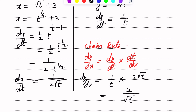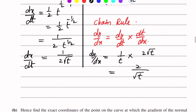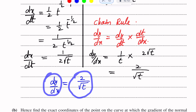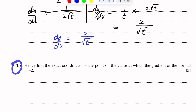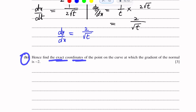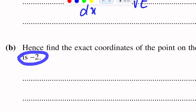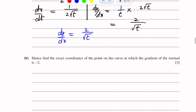So dy over dx, which we need to find in terms of t, equals dy over dt which is 1 over t, multiplied by dt over dx. dt over dx is the reciprocal of dx over dt, which is 1 over 2 square root t. So dt over dx is 2 square root t. The square root t and t cancel, giving us 2 over square root t.